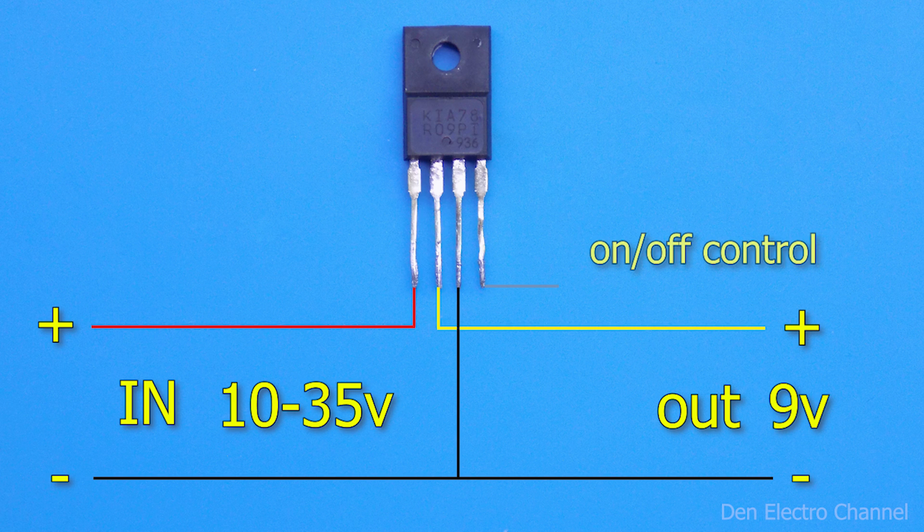The fourth leg is the control output. If it hangs in the air and no voltage is applied to it, then the output of the microcircuit will be open and the current will flow to the load.